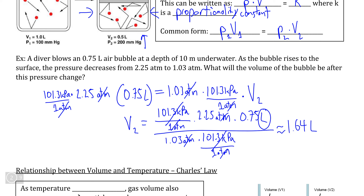This result is basically what we would expect: as the air bubble rises to a higher level in the water, the pressure decreases, and therefore the volume is going to increase — and that's exactly what we see.